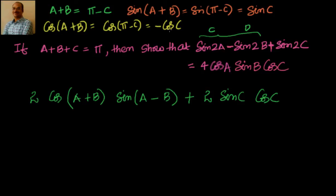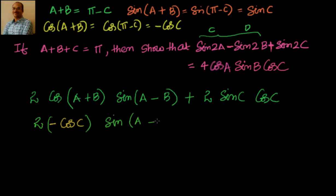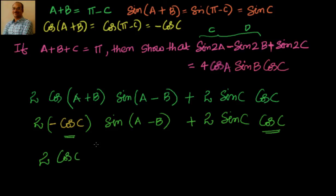I see that cos(a+b) equals minus cosC. So in this expression I can take cosC common. cos(a+b) equals minus cosC, so the expression becomes 2 · (−cosC) · sin(a−b) plus 2sinC cosC. Taking cosC common, this becomes 2cosC · [−sin(a−b) + sinC].